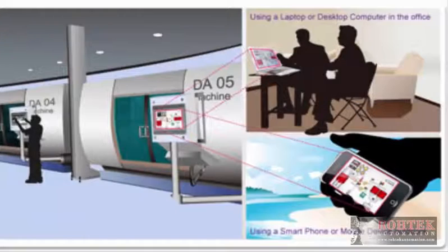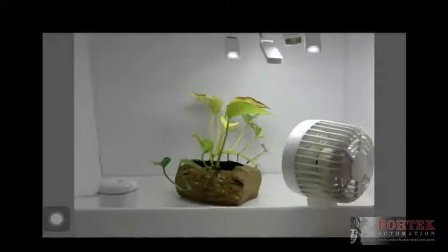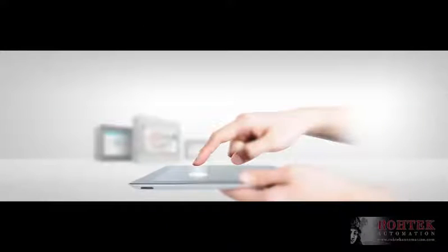The EMT3070 can use VNC to view the screen exactly as it appears on site, and the CMT Server can be accessed with CMT Viewer.